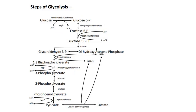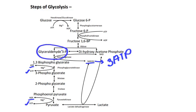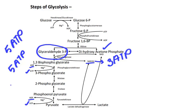Now we will count the ATP produced in both aerobic and anaerobic glycolysis. In these two steps, 2 ATP is produced, and here 1 NADH is produced. This NADH can produce 3 ATP in the electron transport chain. So, 1 molecule of glyceraldehyde-3-phosphate can produce 5 ATP. Dihydroxyacetone phosphate follows the same pathway and also makes 5 ATP. So totally, 10 ATP is produced in aerobic glycolysis.